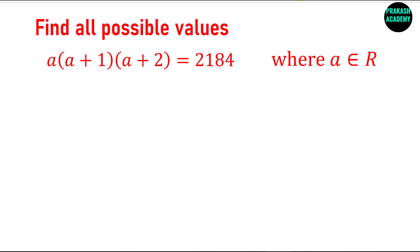In this problem we have to find all possible values of A. We have an equation: A into A plus 1 into A plus 2 is equal to 2184. We have to find all possible values of A, and it is given that A belongs to the real number set, that is A is a real number.